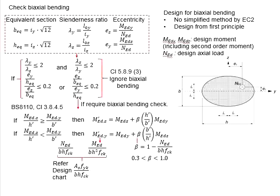First, we need to determine whether the biaxial bending needs to be checked. This is done by checking these criteria here. If these criteria are fulfilled, the biaxial bending can be ignored.